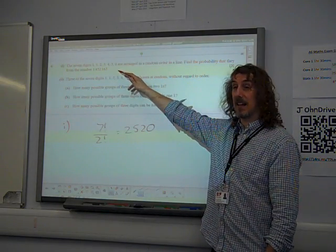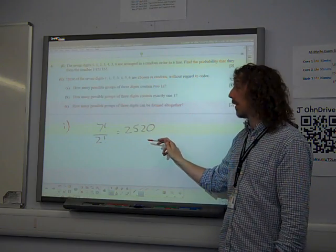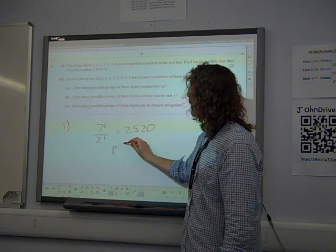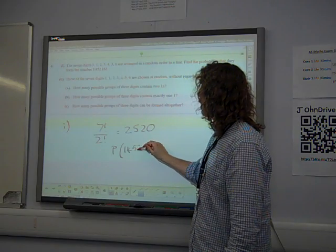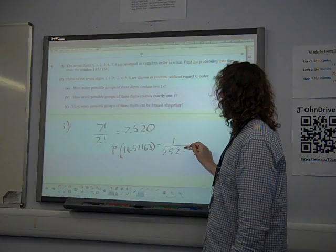That's the total number of arrangements. That is exactly one of those total number of arrangements. So the probability of it being the arrangement 1452163 is one over 2520.